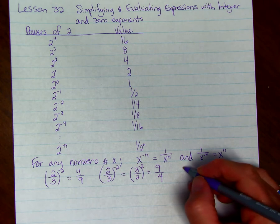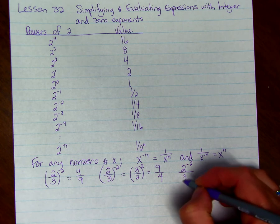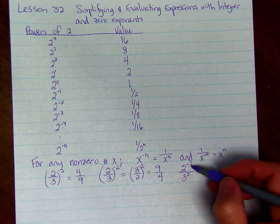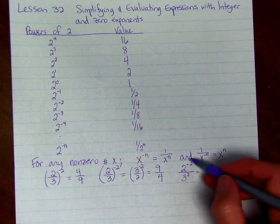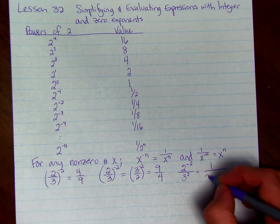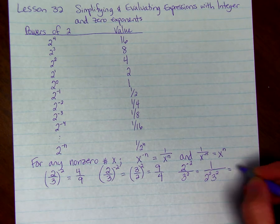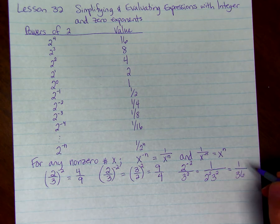If we had a number with a negative exponent, 2 to the negative 2, and we divided it by a number with a positive exponent, we can move the 2 to the negative 2 to the denominator. So that's taking the reciprocal and make it positive. So that's 1 over 4 times 9, or 36.